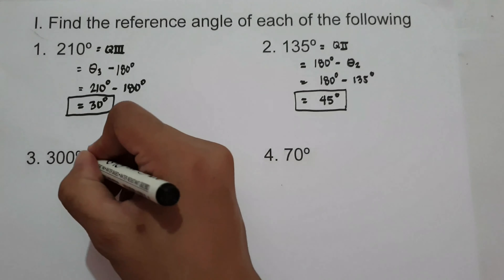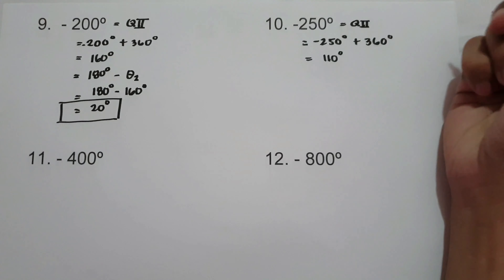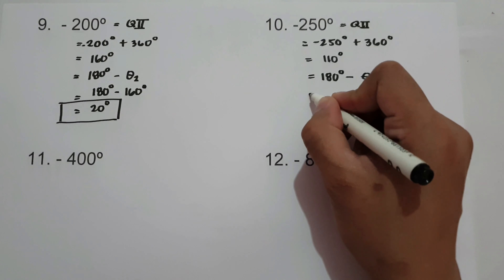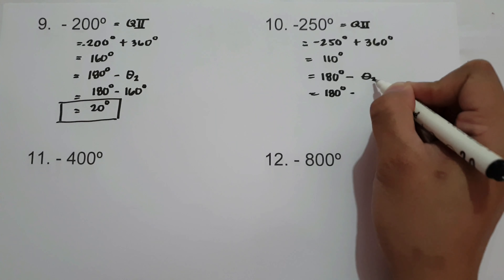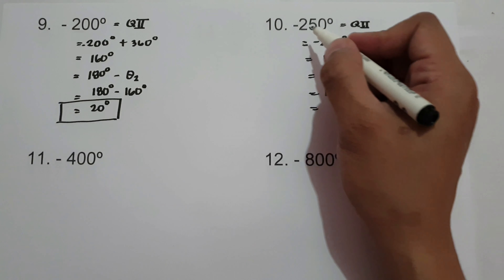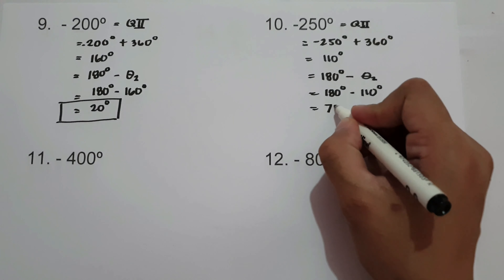What about number 10? We have negative 250°. To make this angle positive, let us add negative 250° plus 360°, which gives 110°. It is also located in quadrant 2, between 90° and 180°. The reference angle in quadrant 2 is 180° minus 110°, which is 70°. The reference angle of negative 250° is 70°.